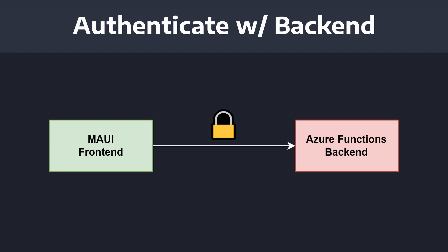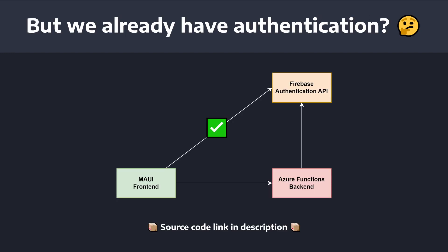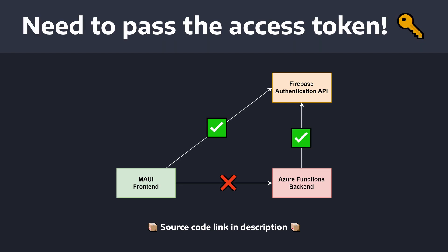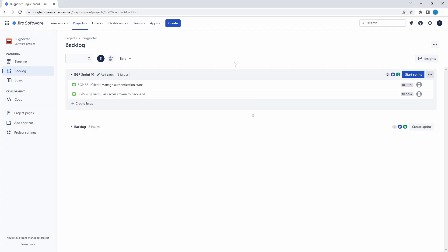Like most applications, we need to authenticate with our backend. Currently in BugPorter, we have authentication on the frontend and authentication on the backend, but we're not sending the Firebase access token from our .NET MAUI application to our backend Azure function. So all requests that hit our backend end up being unauthenticated. We need to manage authentication state in our .NET MAUI frontend application and then pass the access token of the currently logged-in user to our backend Azure function.